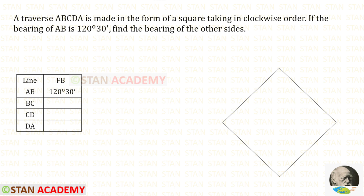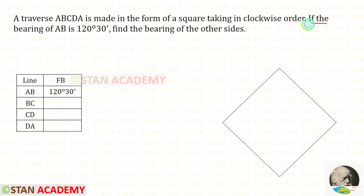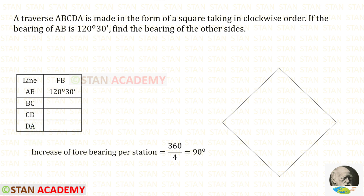The traverse is made in the form of a square and is taken in the clockwise order. Only the fore bearing of AB is given, which is 120 degrees 30 minutes. We have to find the rest of the four bearings. Now let us find the increase of fore bearing per station. In the square there are four stations, so we have to divide 360 by 4. When we do that, we will get 90 degrees.